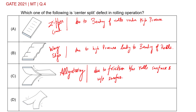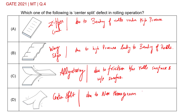Option D: this defect is known as center split. This defect is due to non-homogeneous plastic deformation of metal across the width.